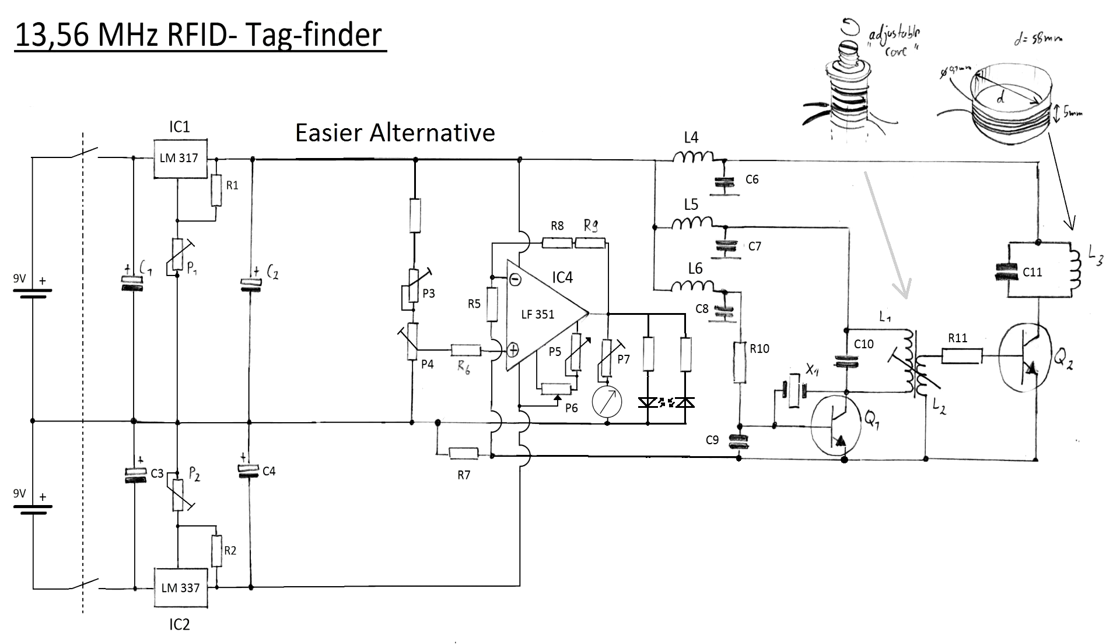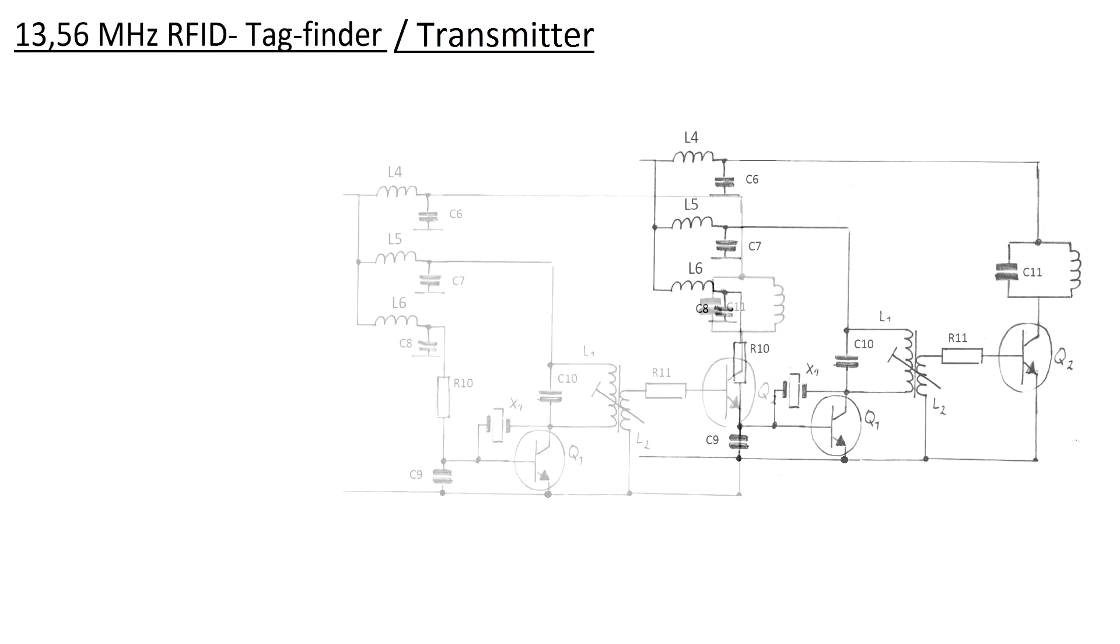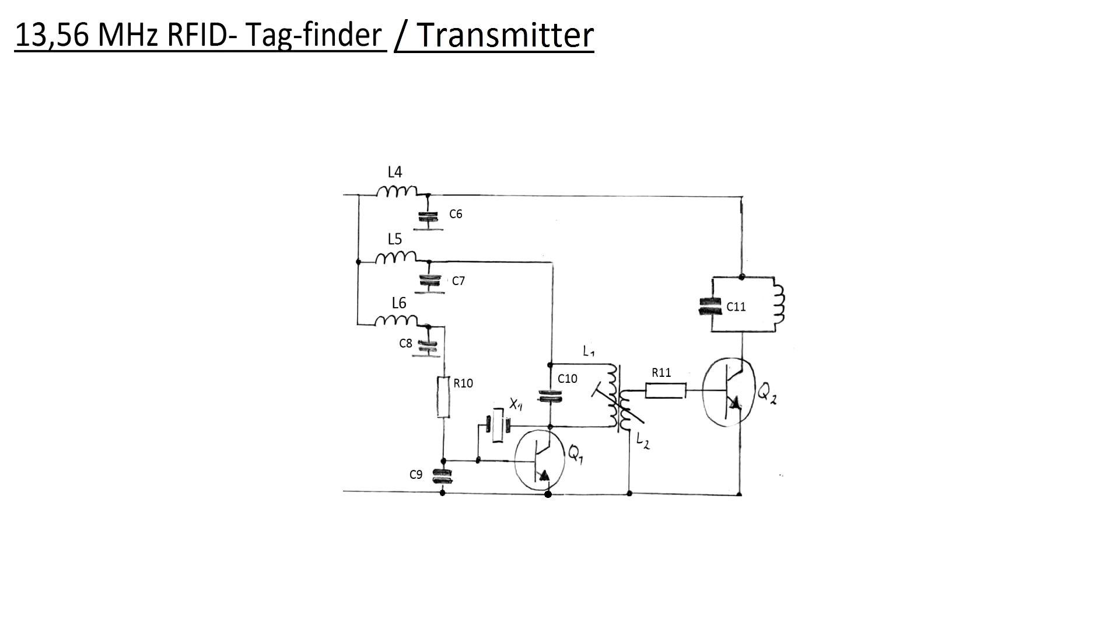Now, some of you might have noticed some similarities between this device and so-called grid dip meters, as they were widely used by radio amateurs. But other than a grid dip meter, this device works with a single, fixed frequency and has an RF amplifier stage that makes it possible to add features that go beyond mere detection.